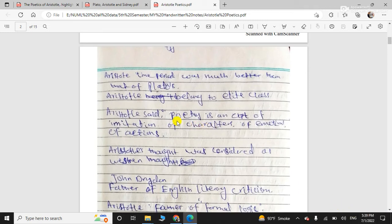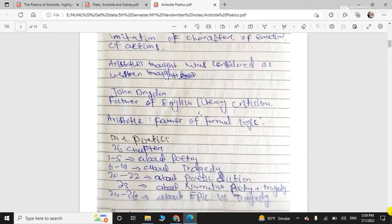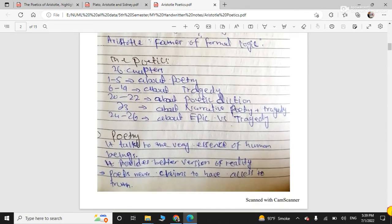So Aristotle says that poetry is an art of imitation. Imitation of what? Imitation of character, imitation of emotions and of actions. Poetry is defined this way by Aristotle. So he considers poetry is an art. Plato said that poetry is a mere imitation, whereas he says that poetry is an art of imitation. He gave it the status of art, gave it importance.